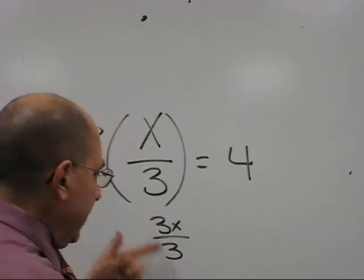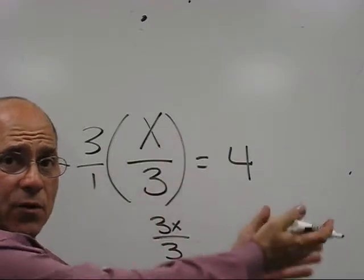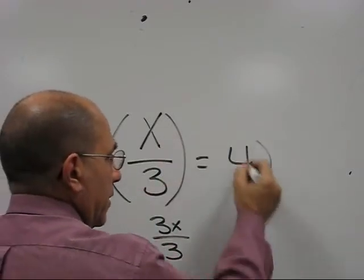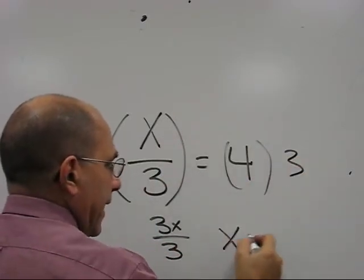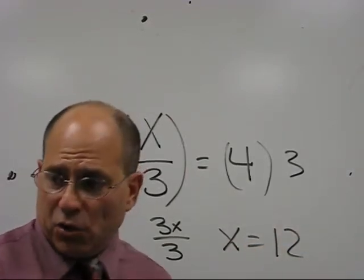Remember from the last time, 3 into 3 equals 1. Okay, what we did on this side equals 1? We have to do the same thing on that side. Basically, we're going to multiply this times 3 also, and we're going to find out x equals 12. Okay, you want to see the shortcut? The shortcut goes like this.